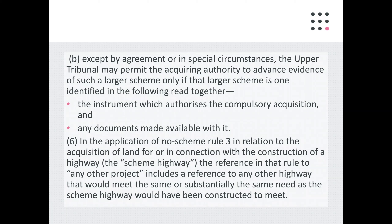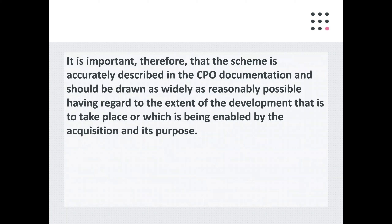In the application of No Scheme Rule 3 in relation to acquisition of land for or in connection with the construction of a highway, the reference to any other project includes any other highway that would meet the same or substantially the same need as the scheme highway would have been constructed to meet. It's important to accurately describe in the CPO documentation the scheme, and it should be drawn as widely as reasonably possible, having regard to the extent of the development that is to take place or which is being enabled by the acquisition and its purpose.